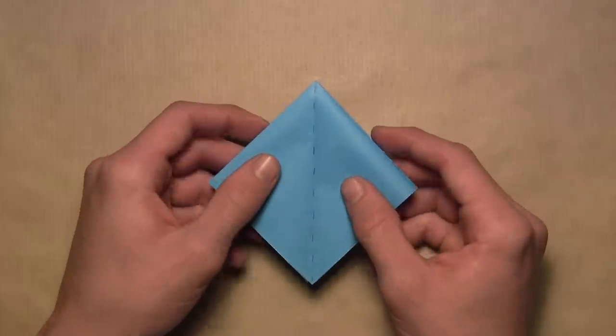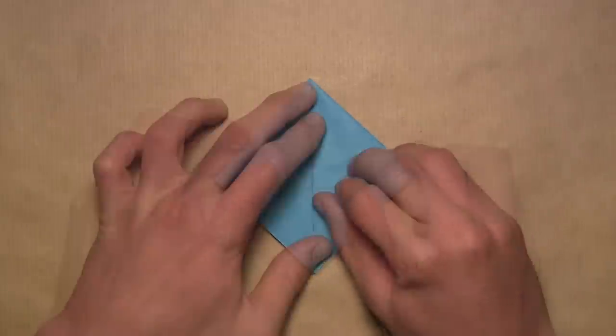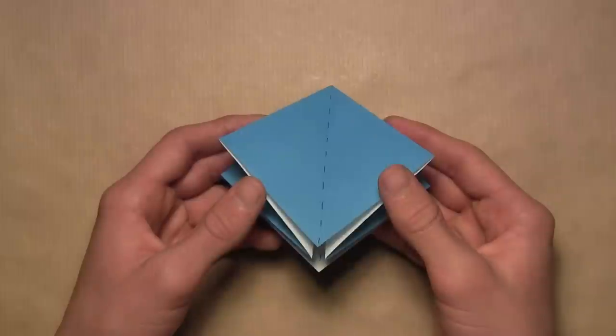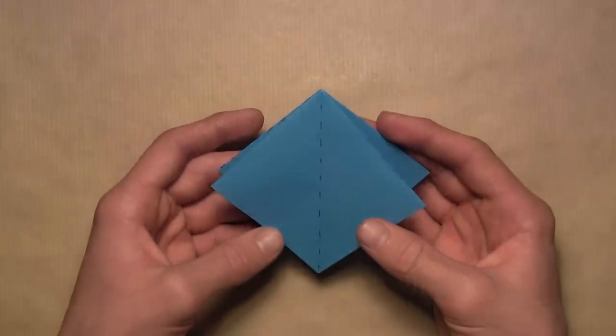Now if you look at the model from the side once again, you'll see that it's shaped like a square, and what you want to do is simply flatten out the model along existing creases. And once you have this, then your preliminary base is complete.